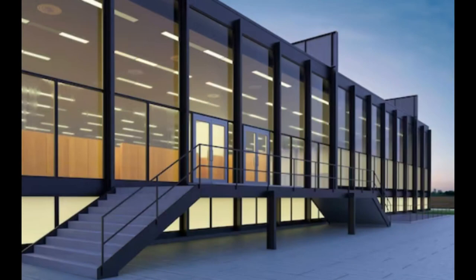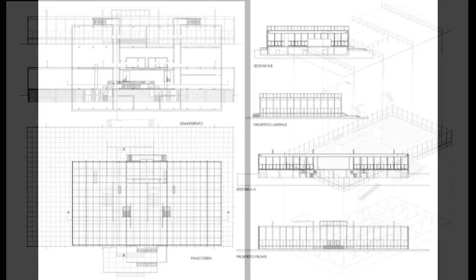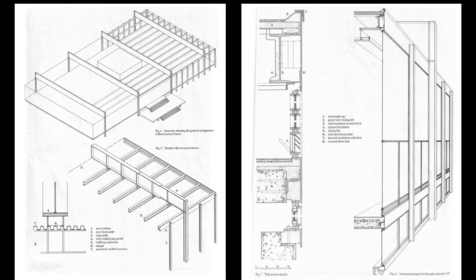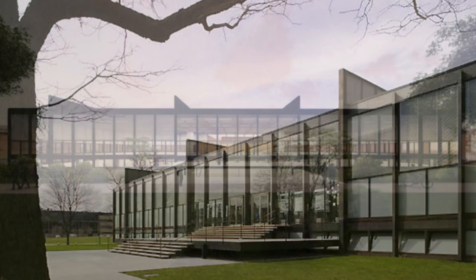Mies van der Rohe is known for his minimalist approach to design, and Crown Hall is no exception. The building is stripped down to its essential elements, with no unnecessary ornamentation or decoration. The focus is on the simplicity of the form, the use of straight lines, and the interplay between positive and negative space.